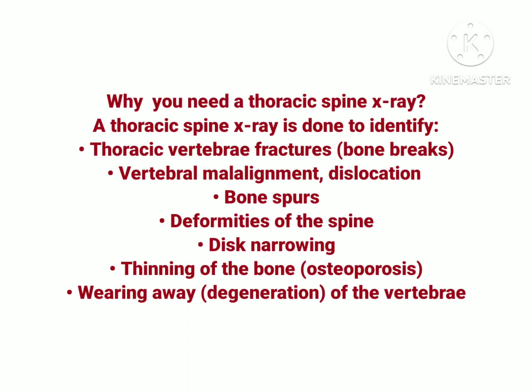Now let's move forward with the indications of thoracic spine X-ray. The thoracic spine X-ray is taken to identify thoracic vertebra fractures or vertebra dislocation in the thoracic spine. Next, bone spurs — bone growth that develops at the edge of the vertebras. Next, deformities of the spine — any disease present near the thoracic spine. Next, disc narrowing, thinning of the bone (osteoporosis), and wearing away or degeneration changes in the thoracic vertebra.